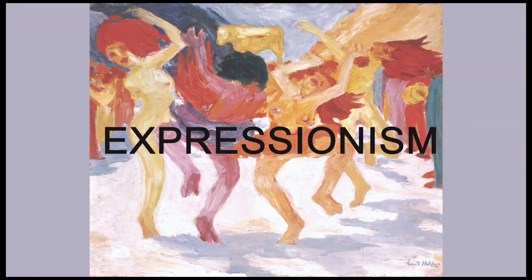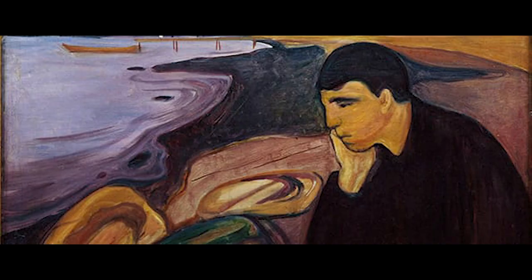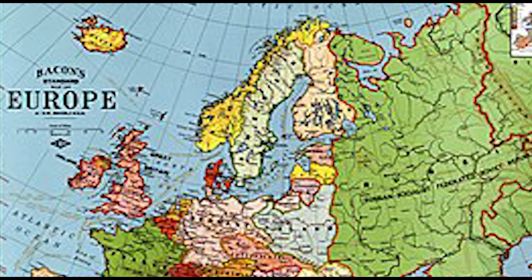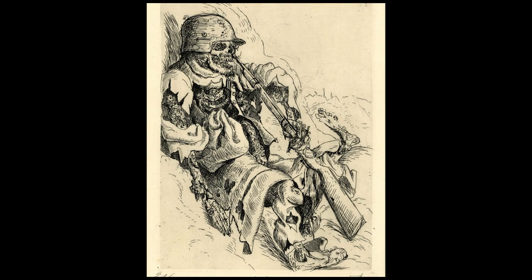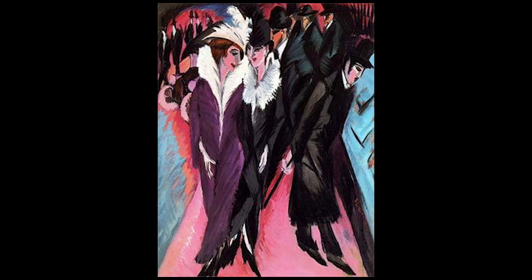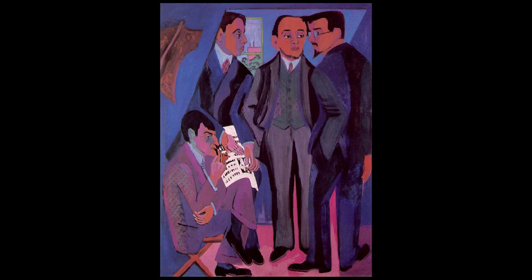Expressionism was a modernist movement, initially in poetry and painting, originating in Northern Europe around the beginning of the 20th century. Its typical trait is to present the world solely from a subjective perspective, distorting it radically for emotional effect in order to evoke moods or ideas.